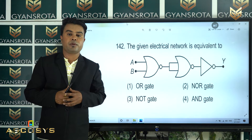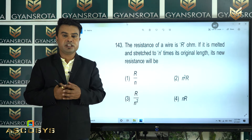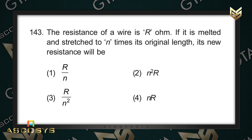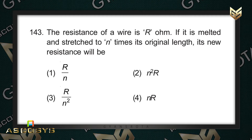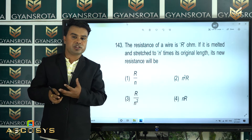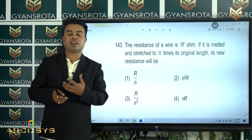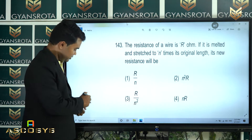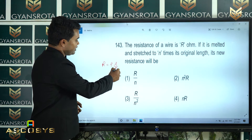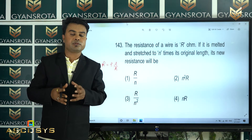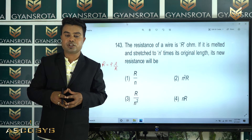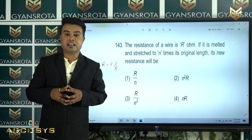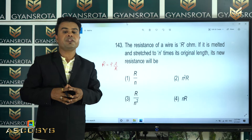Question number 143: The resistance of a wire is R ohms. It is melted and stretched to N times its original length. Its new resistance will be? Using R = ρL/A and the fact that volume is conserved when stretched, the new resistance works out to N²R. This is a common question from the chapter current electricity in class 12. Option number 2, N²R, is the correct answer.